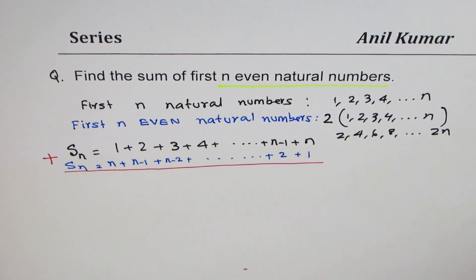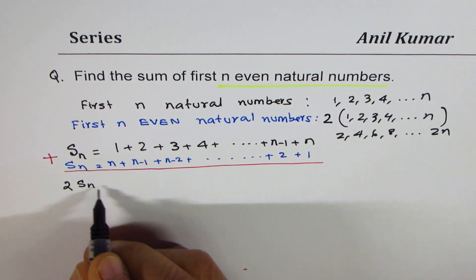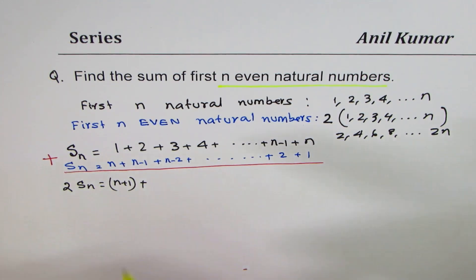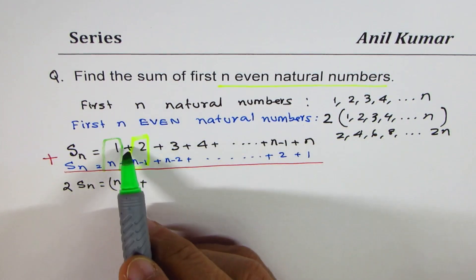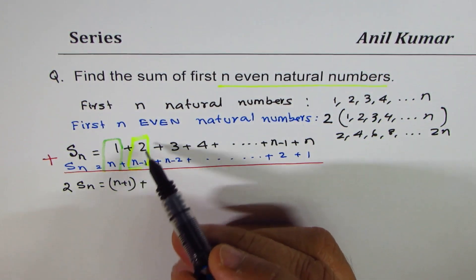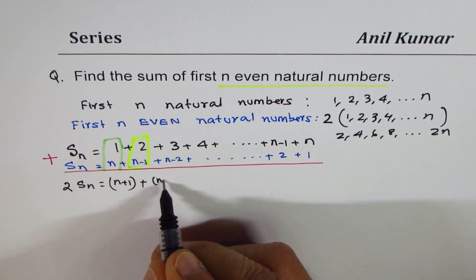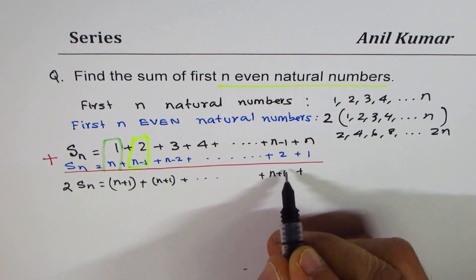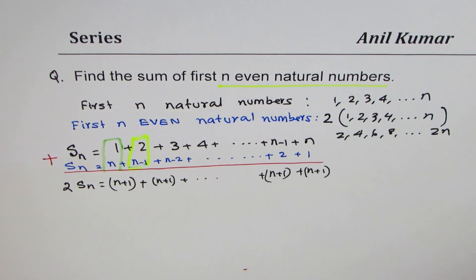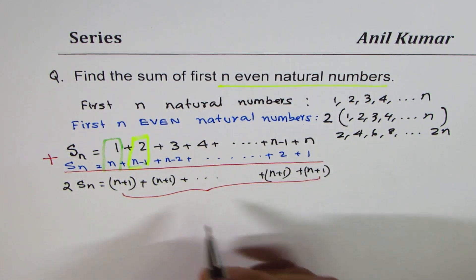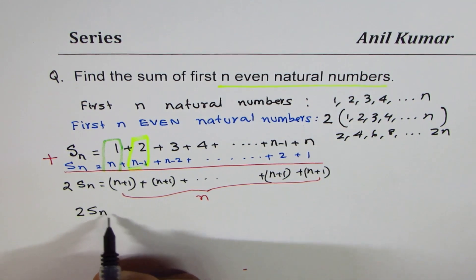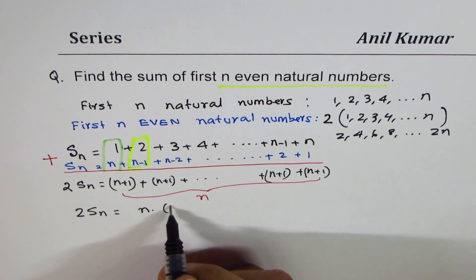If I add these two series, I get twice the sum, and each pair of terms adds up to n + 1. For example, n + 1, then (n−1) + 2 is also n + 1, and likewise all terms pair to n + 1. There are n such pairs, so 2·S_n = n·(n+1).